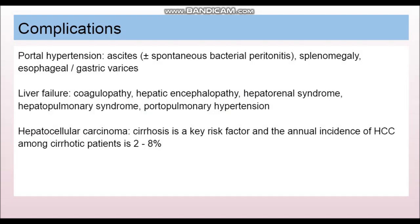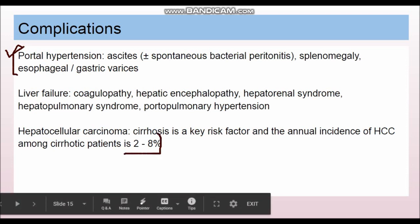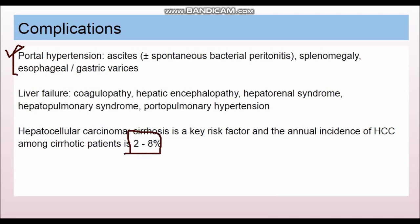Complications of liver cirrhosis include portal hypertension, which can further lead to ascites, splenomegaly, and esophageal and gastric varices. Liver failure can also result, leading to coagulopathy since the liver produces many coagulation factors, hepatic encephalopathy, hepatorenal syndrome, hepatopulmonary syndrome, and portopulmonary hypertension. Hepatocellular carcinoma can also occur — around 2 to 8 percent of cirrhosis patients can develop hepatocellular carcinoma.